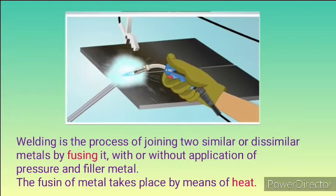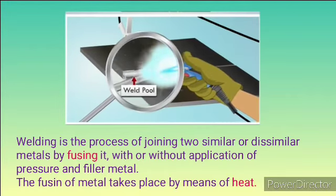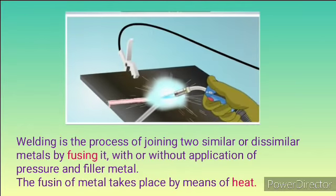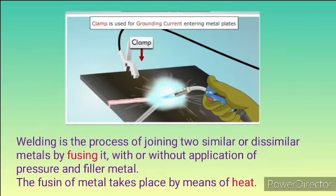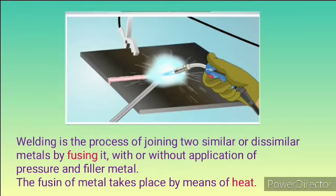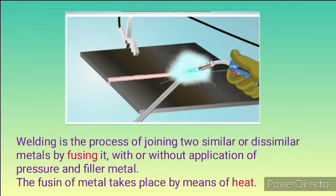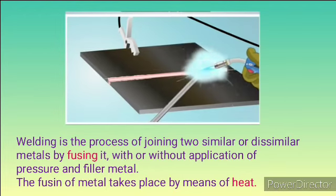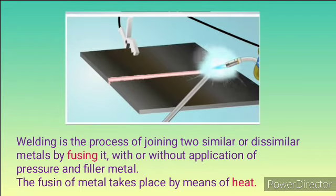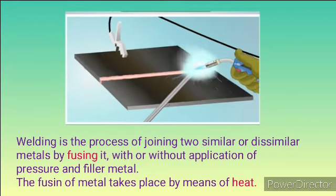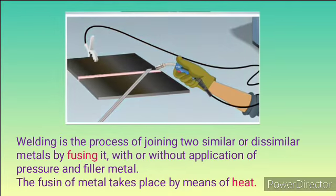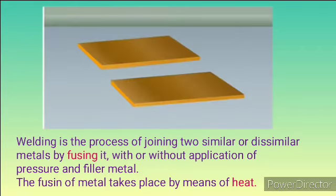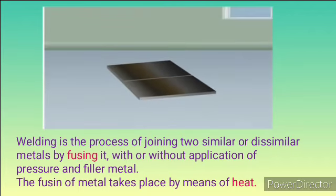What is welding? Welding is a process of joining two similar or dissimilar metals by fusing them with or without the application of pressure and filler metal. Welding is a metal joining process involving two similar or dissimilar metals, with or without the application of pressure and filler material.